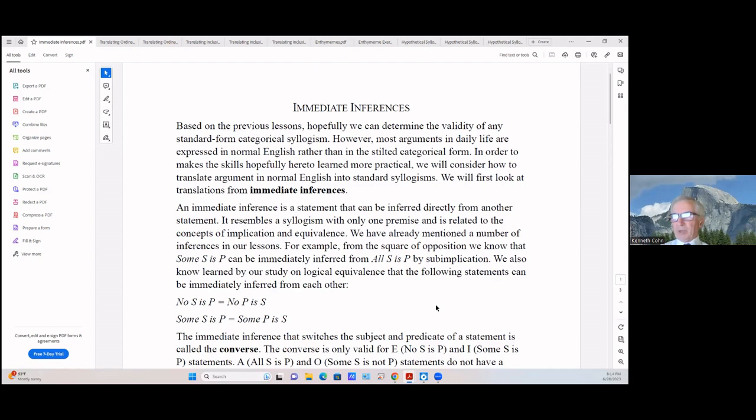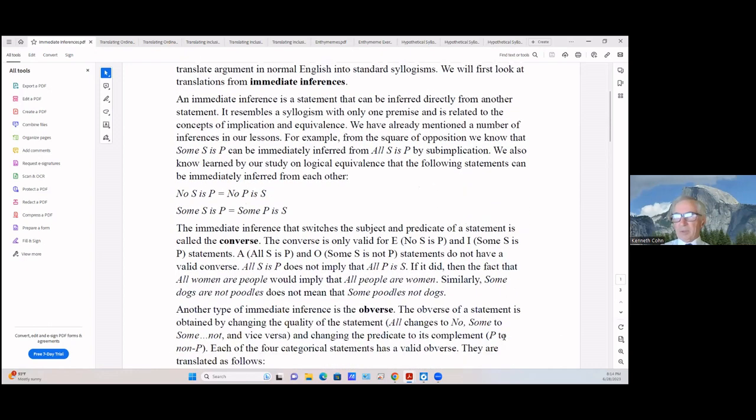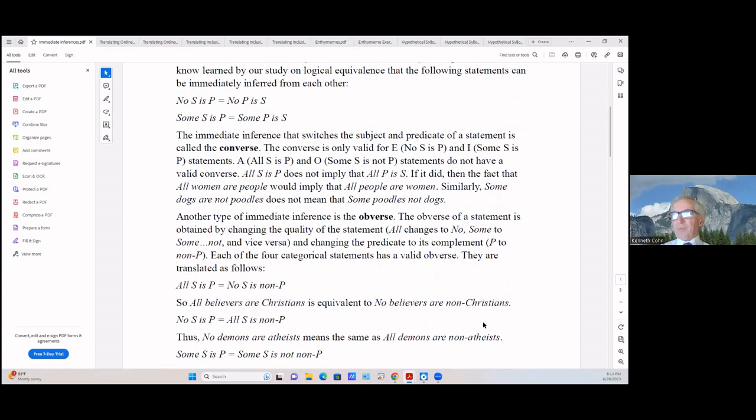For example, from the square of opposition—and you recall what that is—we know that some S is P can be immediately inferred from all S is P by sub-implication. So we can infer that no P is S, and if we state that some S is P then we can infer some P is S.